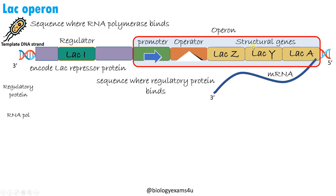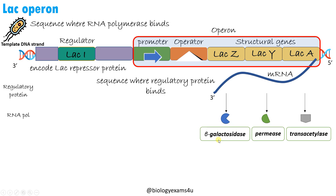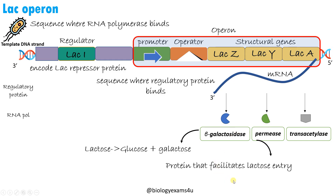That means multiple proteins are encoded by a single mRNA molecule. The lac Z gene codes for a protein called beta-galactosidase, which is involved in breaking down lactose — a disaccharide — into glucose and galactose. The lac Y gene codes for permease, a protein that facilitates the entry of lactose into the cell. And lac A codes for transacetylase, whose exact function is not known. These are the components of lac operon.